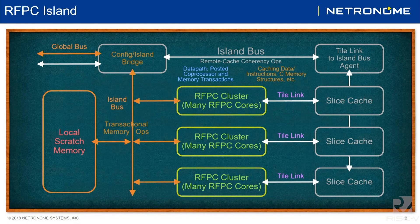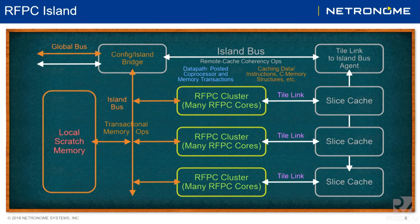Most of the time I wanted to spend today is how do you build up the RISC-V complex to get 1,000 processors. Starting from the top level and working our way down: we have a concept of an island. The island is made up of local memory, clusters of RISC-V processors, and slices of cache. The operations are divided into two parts.